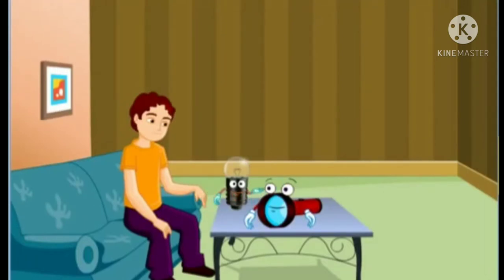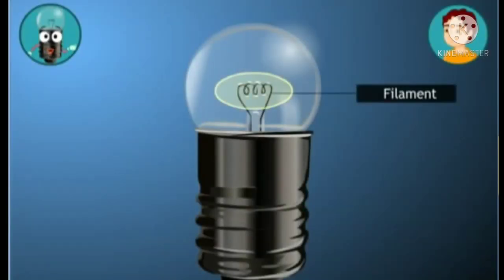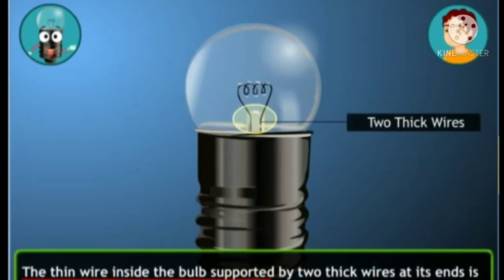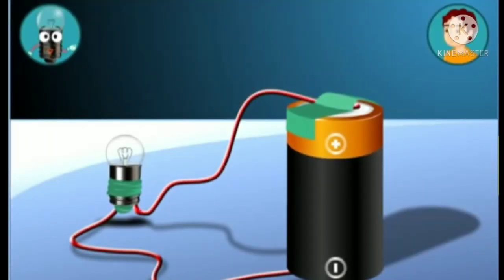Get back — it's my turn to be in the limelight. Cello has told you only half of the story. And what's the other half? That's me, Chamku, the bulb inside the torch. The cell by itself couldn't make Flashy function if I wasn't there to use the electricity provided by it. Can you see this thin wire? That's my filament. This filament is supported by two thick wires at its ends. When electricity from the cell passes through this filament, it gets heated up and glows.